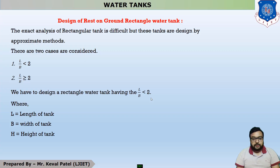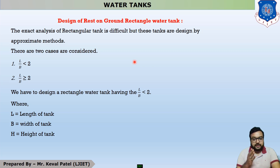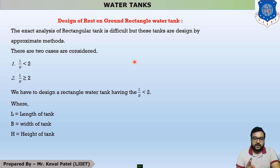Hello everyone, this is the second type of example. In the last lecture, we covered our first type of water tank, the Elevated Storage Reservoir, also called ESR. In the ESR type, we discussed the INS type of water tank covering three main components.